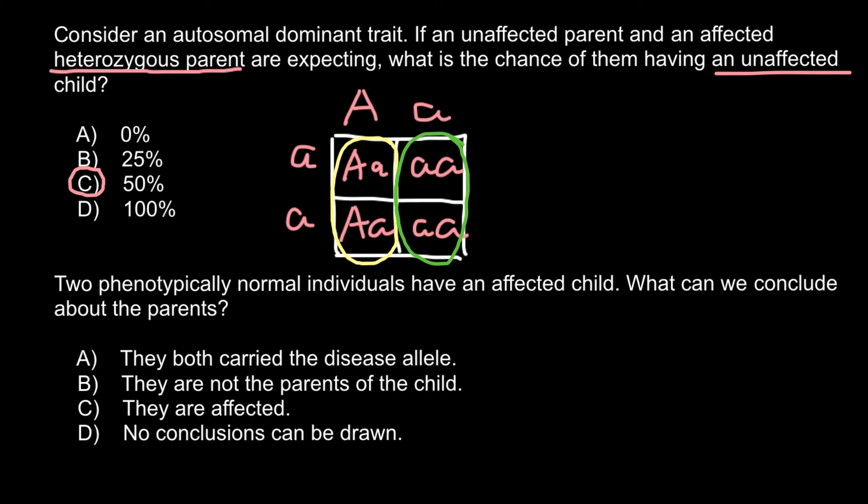Two phenotypically normal parents may have a genetically affected child if both parents would be normal and the genetic disorder has to be recessive. In this case we would be able to see the following picture.